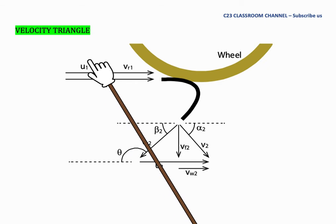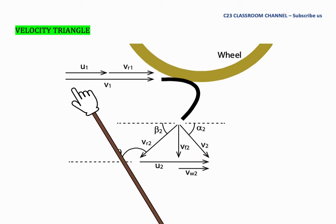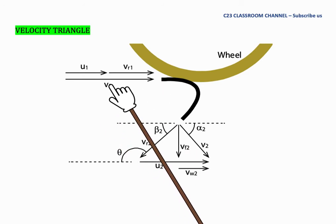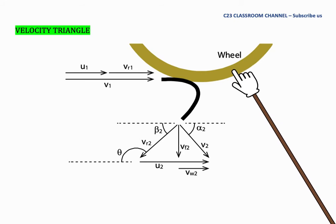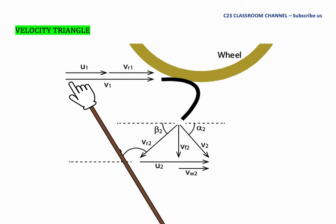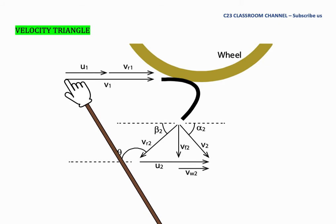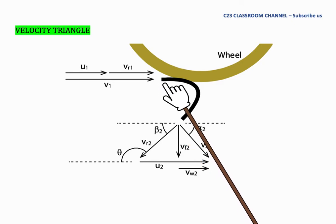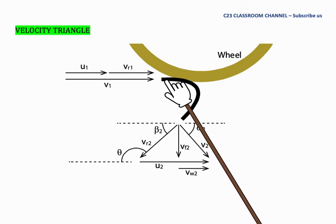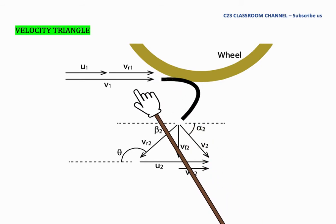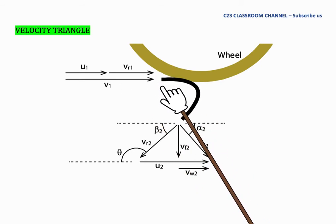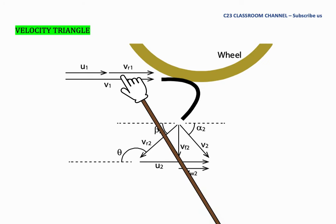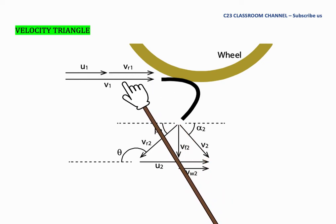Looking at the inlet: the water jet flows from left to right and we assume it flows tangent to the wheel to achieve maximum rotation. So we draw the absolute velocity V1 horizontally. At the inlet, the bucket is almost parallel with the water jet to ensure no losses occur. We assume the relative velocity component can be drawn parallel to the direction of the water jet.